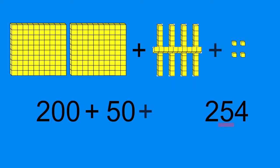The five in the tens place shows us that we have 50. Now we're going to add that to our ones place. The four in the ones place tells us that we have four little ones. 200 plus 50 plus 4 equals 254. Well done.